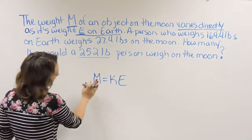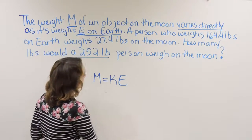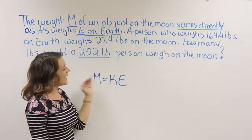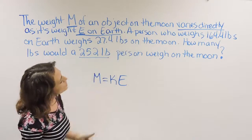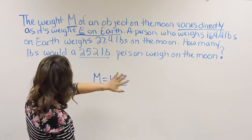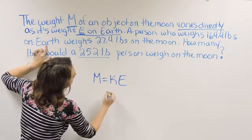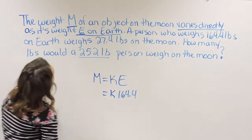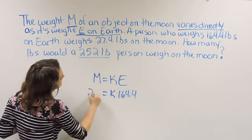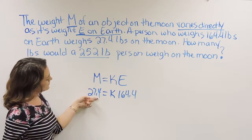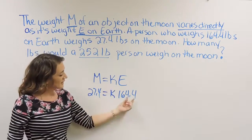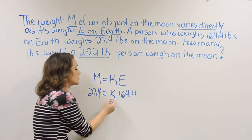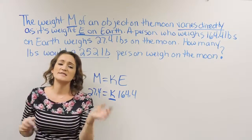We're going to start with the equation: weight on the moon varies directly as weight on Earth. We take the second sentence and apply it. A person weighs 164.4 pounds on Earth — that's our E — and they weigh 27.4 pounds on the moon — that's our M. We plug those in and calculate for K, the constant of variation.